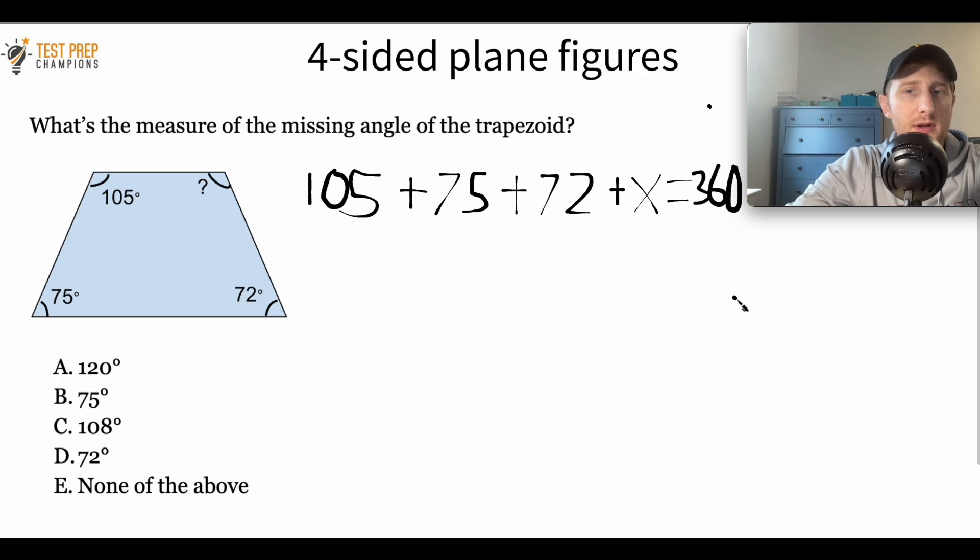So let me add this up in my calculator, 105 plus 75 plus 72, and I get 252 plus X equals 180. No, I'm just kidding. It's actually 360. So remember again that the internal angles of a trapezoid add up to 360.